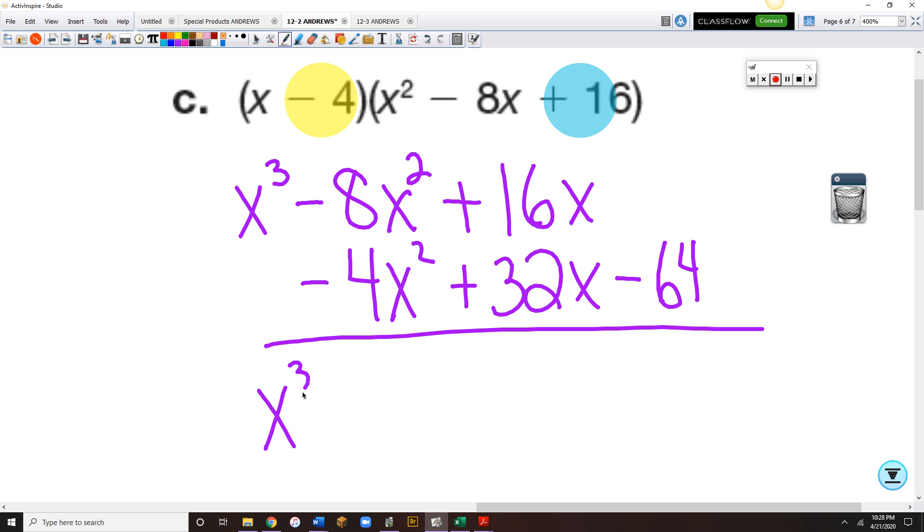Now, we're going to be combining our like terms. If you subtract twice, then I'm combining those together. Minus 12x squared. I'm adding 16 and 48x and minus 64.